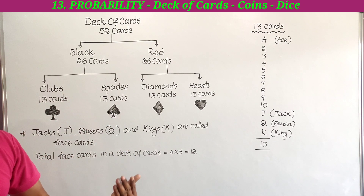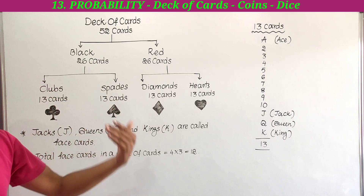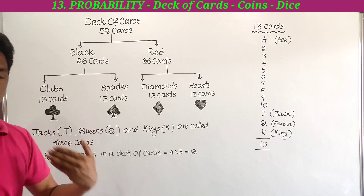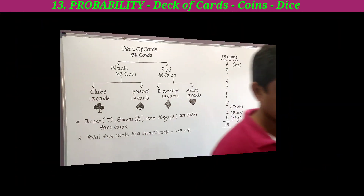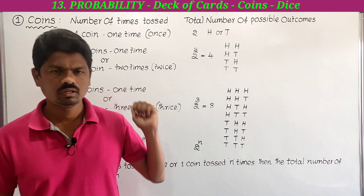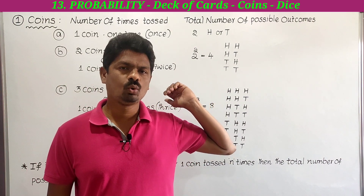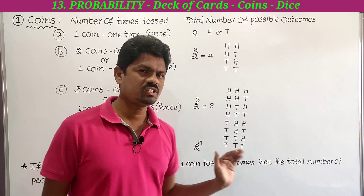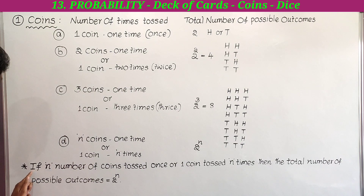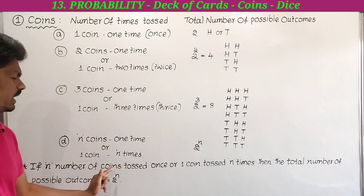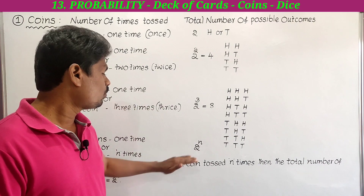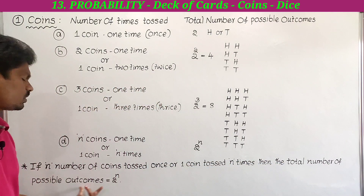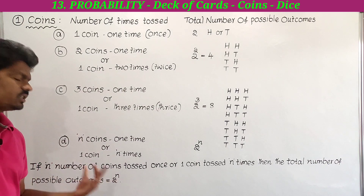Next, we have to learn the total number of possible outcomes — how to find the total number of possible outcomes using coins and using dice. The general formula: if n number of coins are tossed once, or one coin is tossed n times, then the total number of possible outcomes equals 2 to the power n.